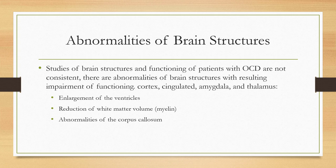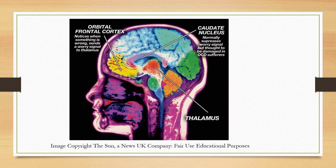Abnormalities of brain structures are also noted in people with OCD. Studies of brain functioning in OCD patients are not entirely consistent, but there do seem to be structural abnormalities with resulting functional impairment. These include abnormalities of the cortex, the cingulate, the amygdala, and the thalamus, sometimes showing up as enlargement of the ventricles, reduction of white matter volume — the myelin — and abnormalities of the corpus callosum.